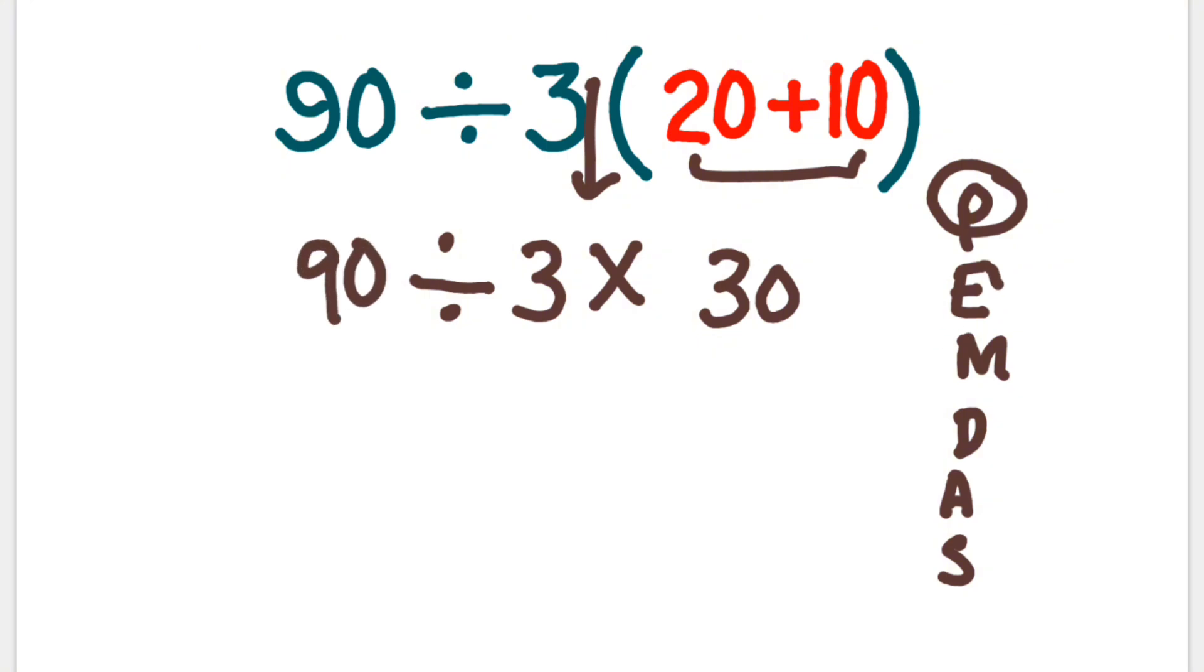Now according to PEMDAS, exponents are not in this question. Multiplication and division both have the same priority, but according to PEMDAS, we have to move from left to right. Multiplication is first and division is second in the acronym, but as we move from left to right in the problem, division is here. So we have to solve division.